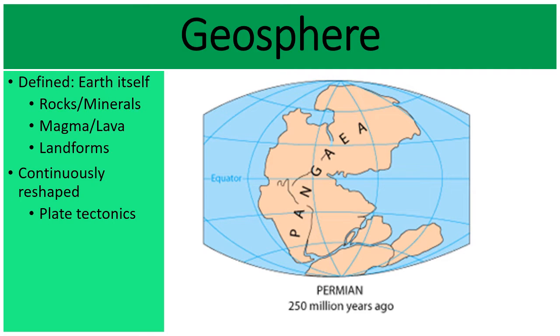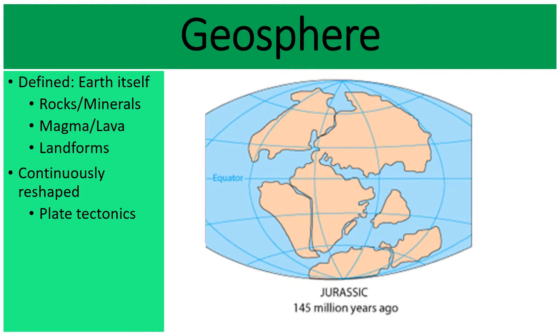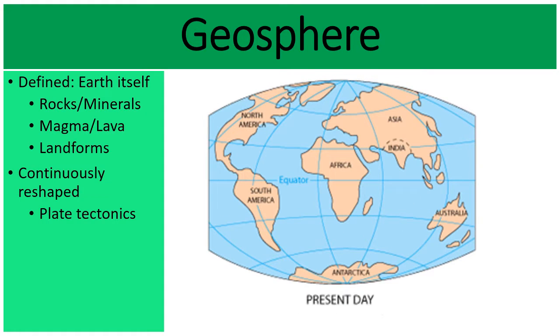And so if you've heard of Pangea before, Pangea is this large landmass of all the supercontinents here about 250 million years ago. But because the Earth is constantly being reshaped over the years, the continents are dividing and separating. Here we are 145 million years ago.